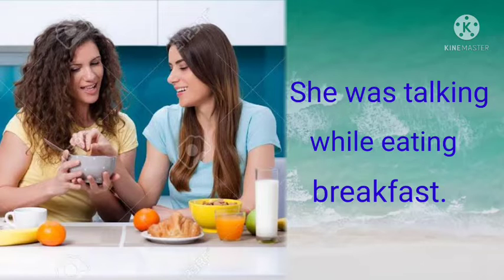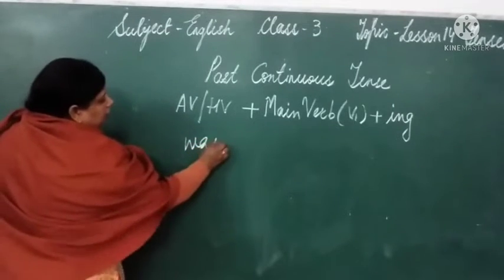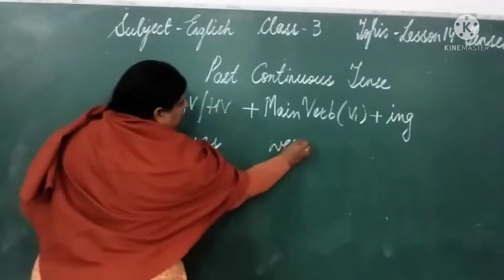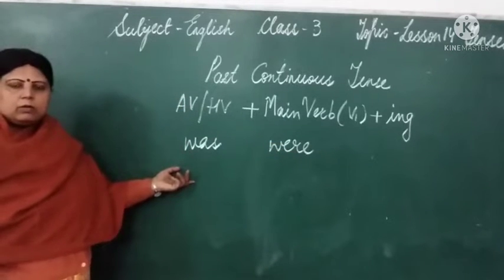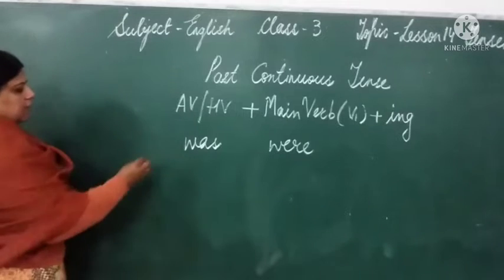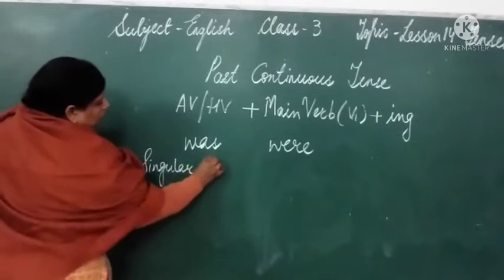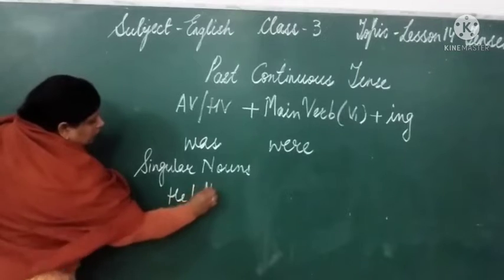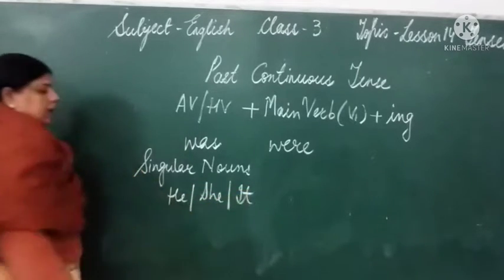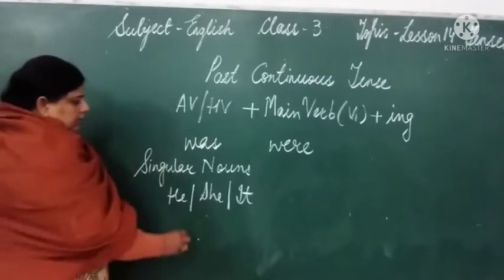Isliye hum isko kehte hain past continuous tense. Ismein hum do helping words use karte hain — ek hota hai 'was' aur ek hota hai 'were'. Was ke friend kaun hote hain? Was ke friend hain — jitne bhi singular nouns hain — he, she, it. Aur inka ek aur friend hota hai, yaani 'I'.